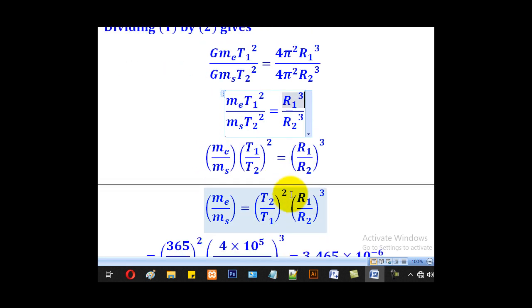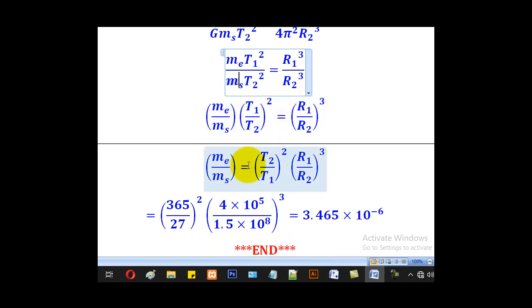In this step they want the ratio of the mass of the Earth to the mass of the Sun. Isolate it out as I have done here. We remain with T₁ over T₂ everything squared, and this side we remain with r₁ over r₂ everything cubed.